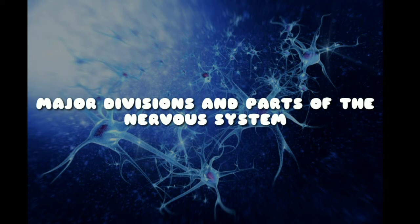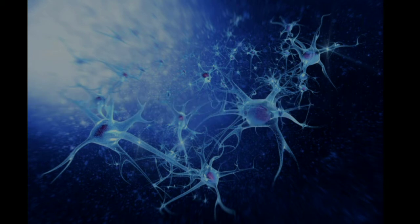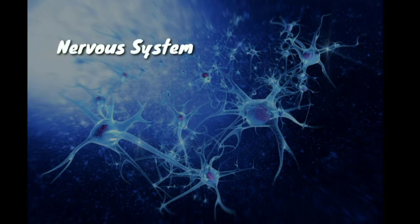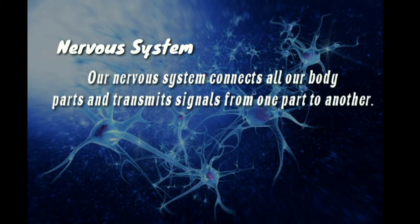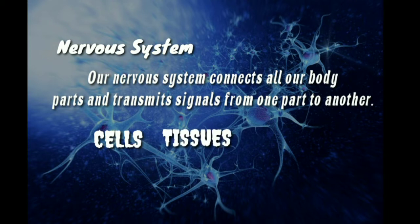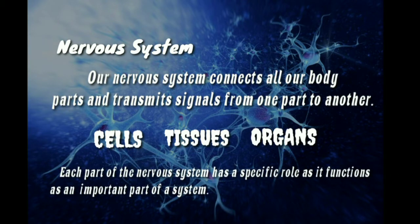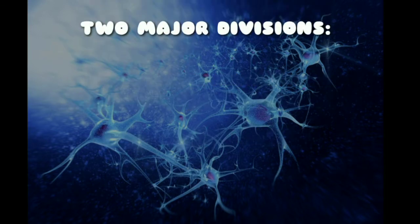Let us first talk about the nervous system and its function. Our nervous system connects all our body parts and transmits signals from one part to another. It is a system of cells, tissues, and organs that regulates the body's responses to internal and external stimuli. Each part of the nervous system has a specific role as it functions as an important part of the system.